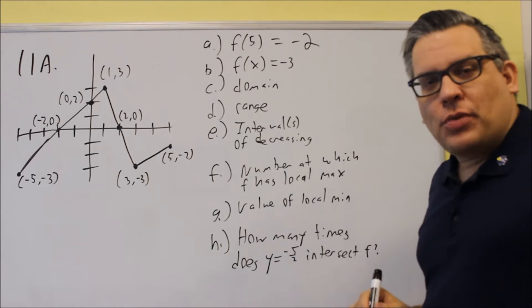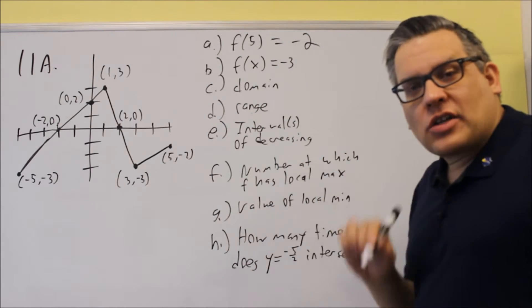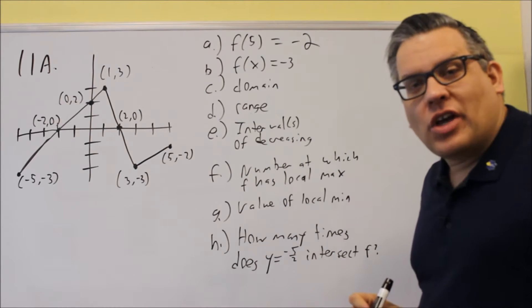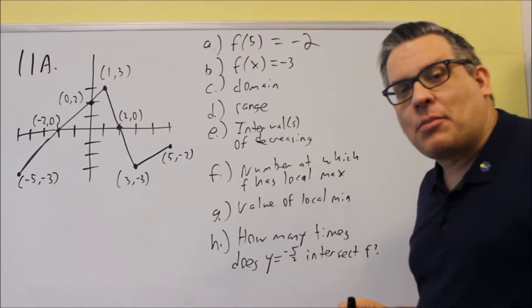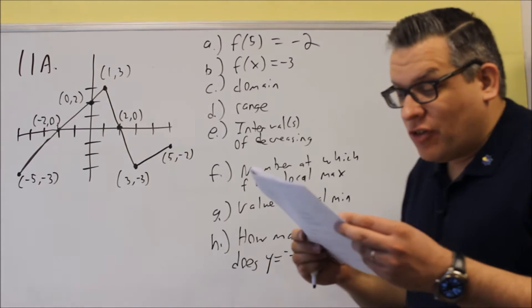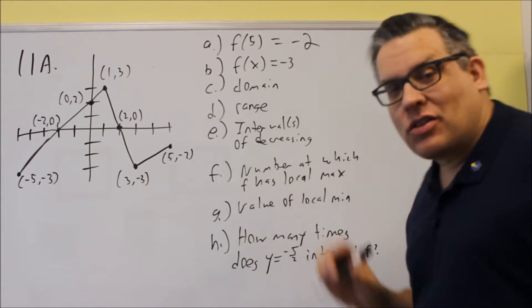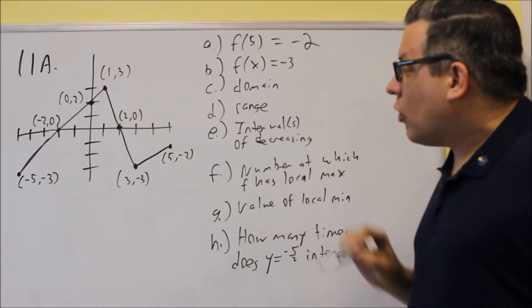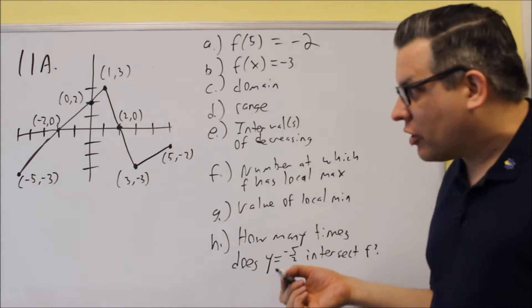Now the second one for b is saying what x value will give you a y value of negative 3? So it's actually asking you the opposite. So it says specifically find all values of x such that this is true. So then that means you want to look for what x value will give you a y value of 3.